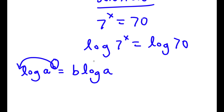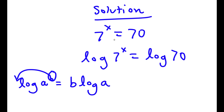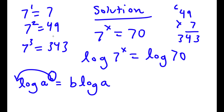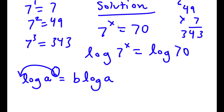An important property of logarithms is that if I have something in the form log a to the power of b, I can move the exponent b to the front: this equals b times log a. This property is really important because it changes an exponent into an actual term. Right now x is an exponent and it's hard to solve for because x is going to be a decimal — for example, 7 to the power of 1 is 7, 7 to the power of 2 is 49, and 7 to the power of 3 is 343, so x is somewhere between 2 and 3. This property lets us turn x into a solvable term.